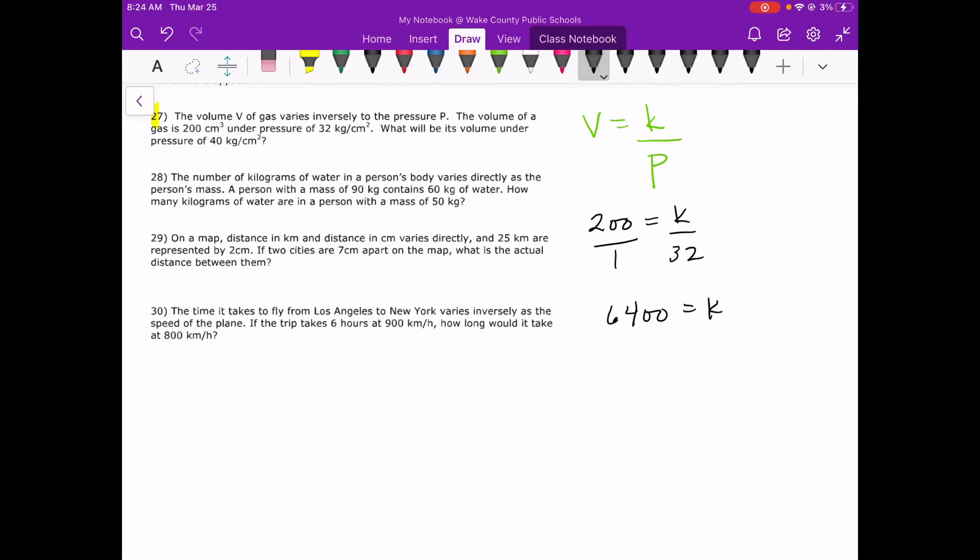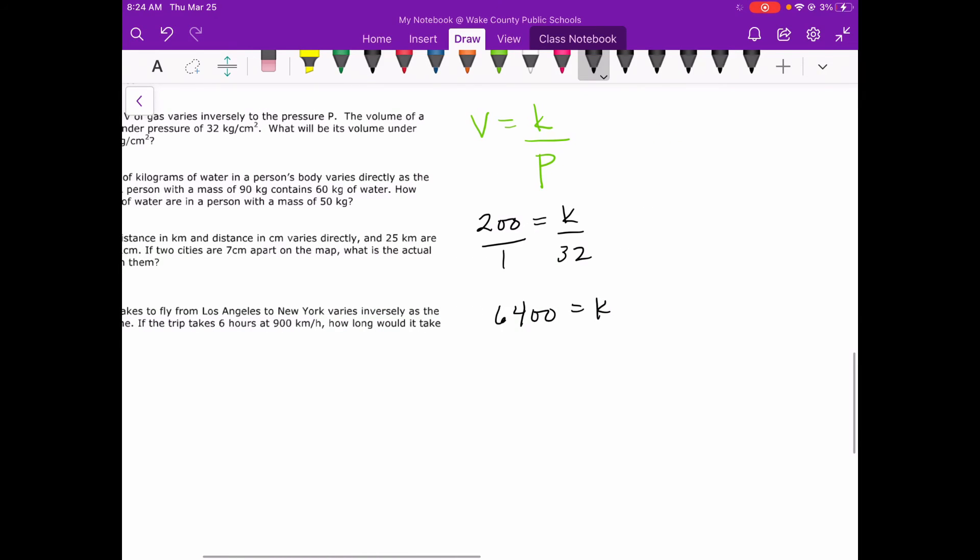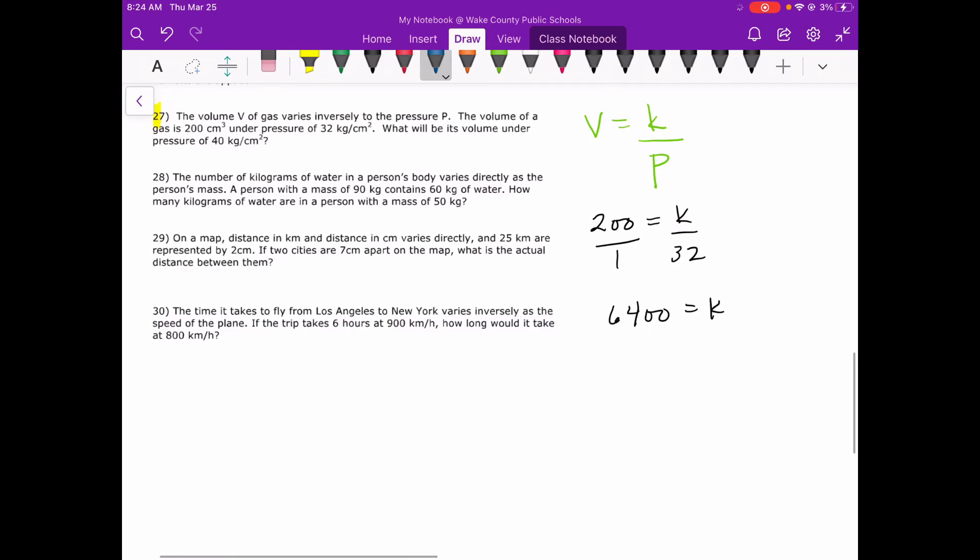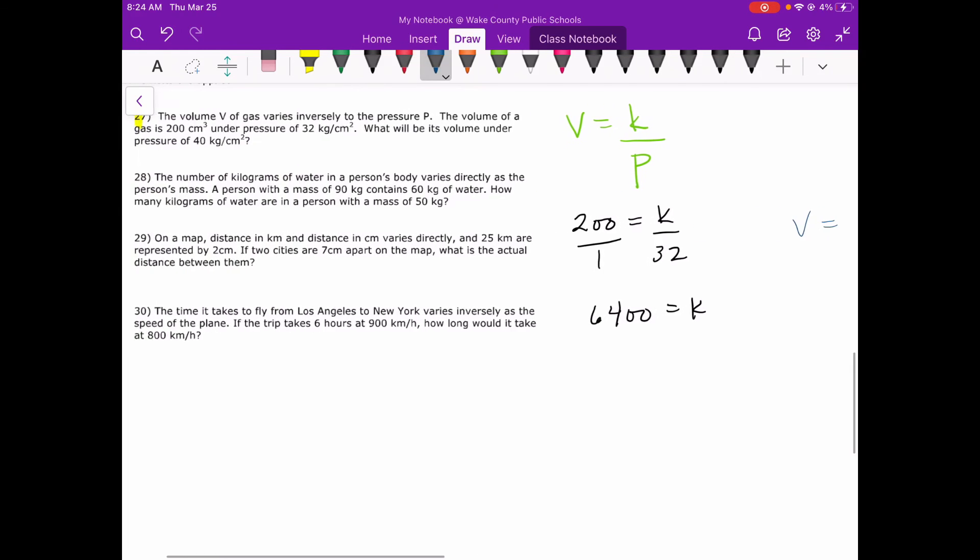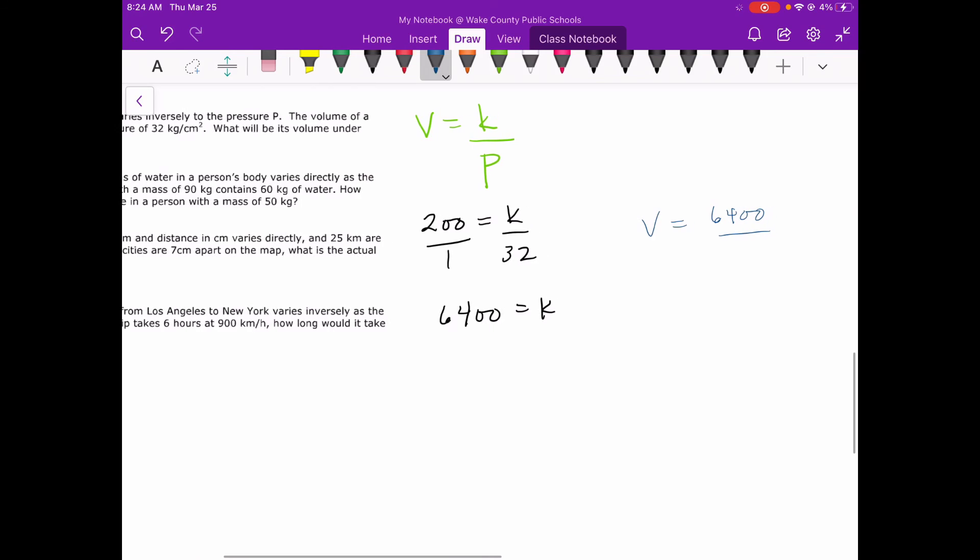So now everywhere I see a K, I can put 6400. So then the second scenario that they want us to find is what will be its volume under pressure of 40 kilograms per centimeter squared. So I want to know what's the volume going to be when the pressure is increased to 40. So what we should expect to happen is that the volume should decrease here.